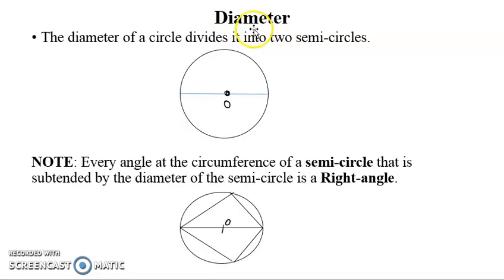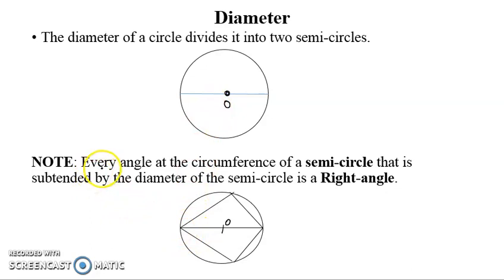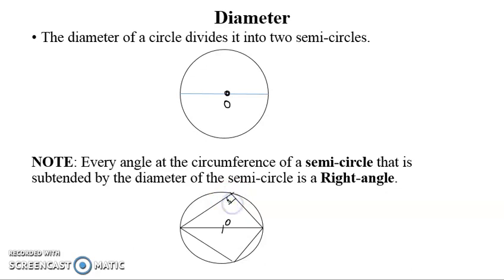A diameter is a straight line that crosses or cuts a circle into two equal parts. Every angle at the circumference of a semicircle that is subtended by the diameter is a right angle. So if we have a circle with a semicircle on each side and a line from a point on the circumference, that angle must be a right angle — 90 degrees.